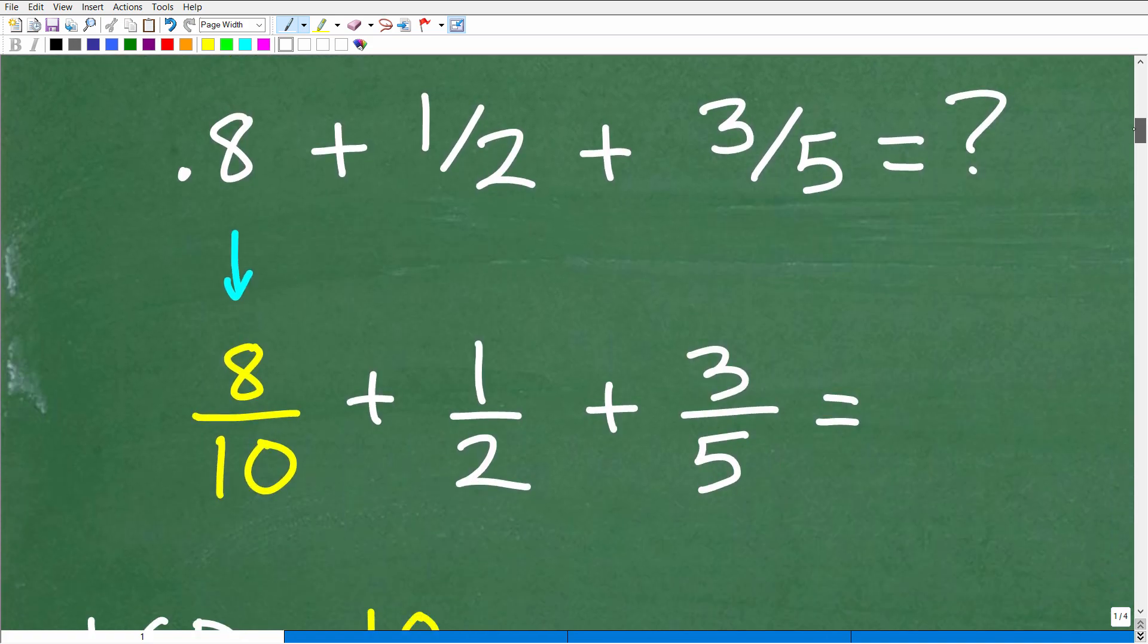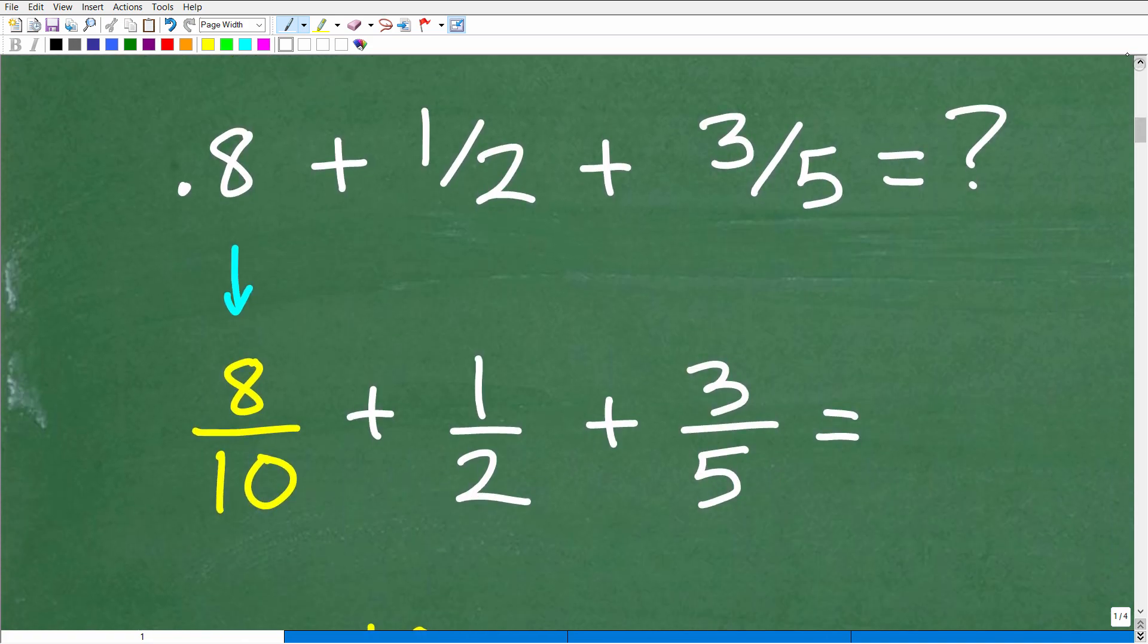So here we have 0.8 plus 1 half plus 3 fifths. Well, there's different ways you can approach this problem, but the easiest way by far is to convert this decimal into fractions. So we're working with fractions. We already have two fractions here. So instead of converting these fractions into decimals, let's just go ahead and take this 0.8 and write it as a fraction. Now, how do we write a decimal as a fraction?